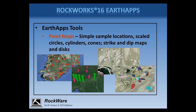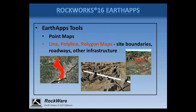If you have strike and dip measurements listed in the data sheet, you can display these as symbols and as oriented disks in Google Earth. If you have coordinates for site boundaries, roadways, underground lines, and other infrastructure, you can display these in Google Earth using the Earth Apps line, polyline, and polygon maps.